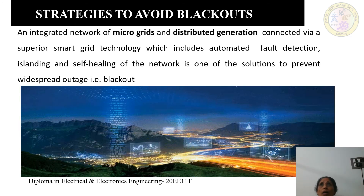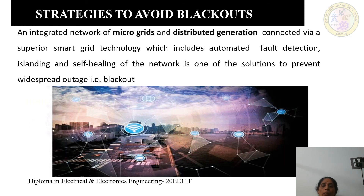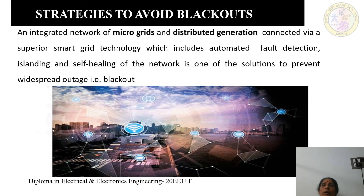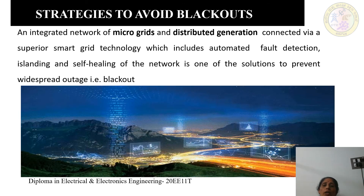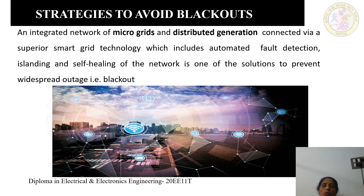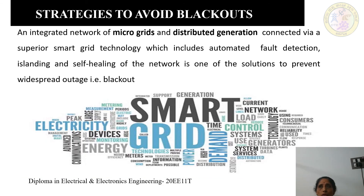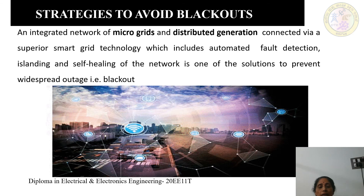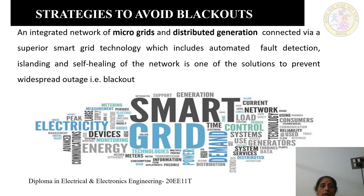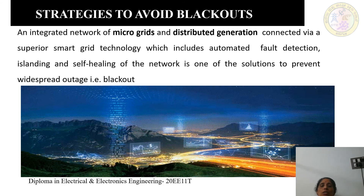Microgrids — for example, hybrid PV cells and biomass — are small grids that are connected together. Smart grid technology, which is mainly software-controlled, enables automated fault detection. When a fault is detected, the system will isolate it and automatically self-heal the network. This is how microgrid distributed generation systems work.